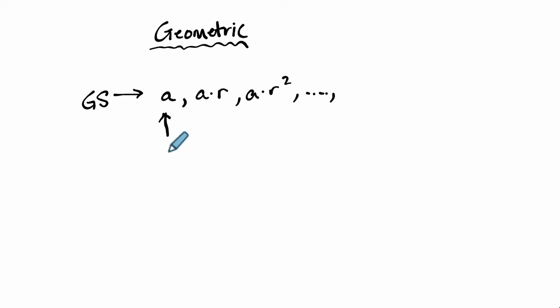And you can see here that on the first step, we just have A. And on the second step, we have A times R to the first power. So already, you might notice that on the second step, the power of the common ratio is only 1, and that's 1 less than 2, which is 1 less than the second step.